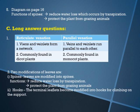Question number five: you have to draw a diagram of the cactus, which is given on page number 16 in the activity part — I think it is in Activity 6. Draw the diagram with proper labeling. The two functions I have already discussed: reduce water loss which occurs by transpiration, and protect the plant from grazing animals, because those spines prevent animals from eating the plant.